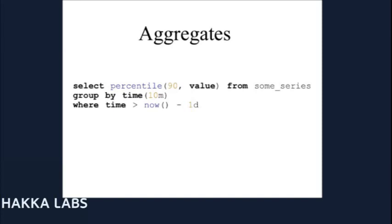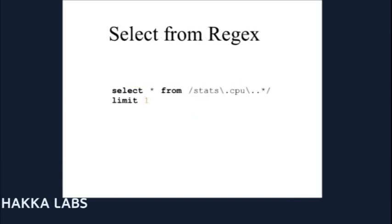In this example we're grabbing the 90th percentile values from some series in 10-minute buckets for the last day. What we get out of this is 6 times 24 points — discrete points demarcated at 10-minute intervals — and those are the 90th percentile values. You can also select from multiple series at the same time by selecting from a regular expression. Here we're grabbing the most recent data point from every series that matches stats.cpu.